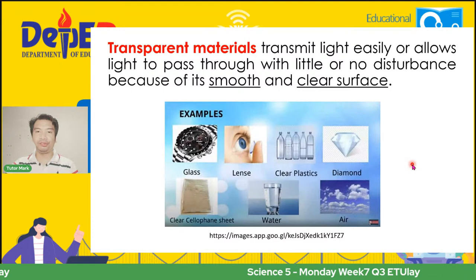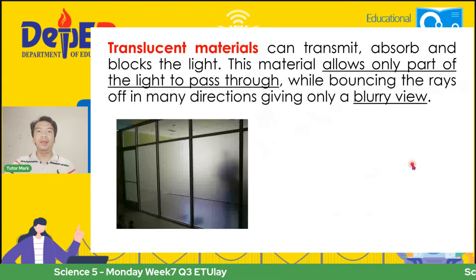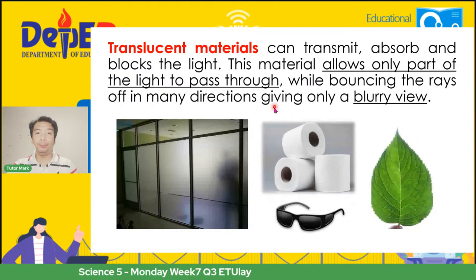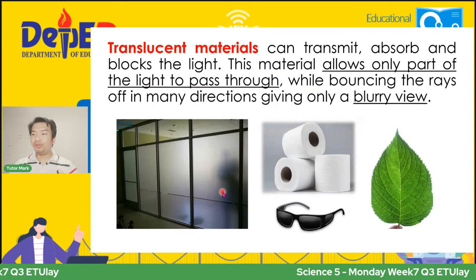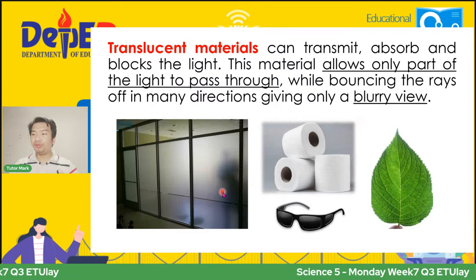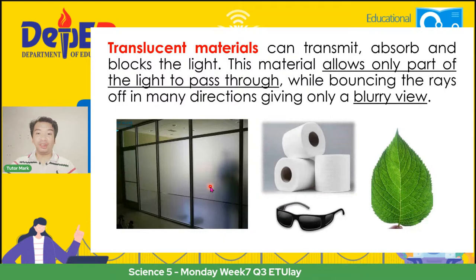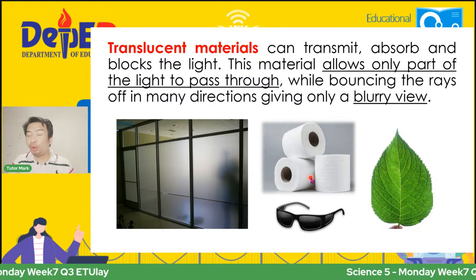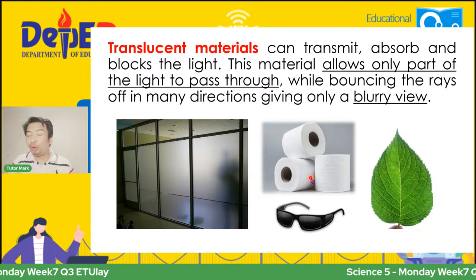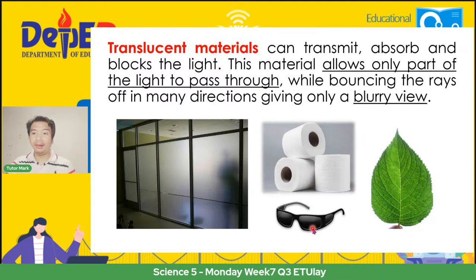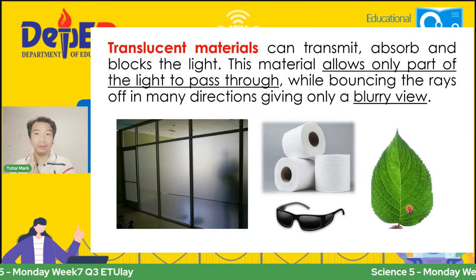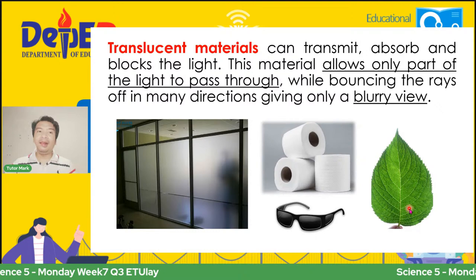On the other side, we have the so-called translucent materials. It can transmit, absorb, and block the light. These materials allow only part of the light to pass through while bouncing the rays off in many directions, giving only a blurry view. Halimbawa, ang frosted glass ay nagpapakita ng kaunting anino, kaunting reflection, pero hindi direct ang pumapasok ang liwanag — translucent ang tawag natin dito. If you have a tissue paper or piece of paper, kapag nadaanan ng liwanag, hindi direct ang tumatagos. Same thing with shades at maging ang dahon — nabablock ang ilan sa light, may ilan na inaabsorb depende sa kulay nito, at nagpapakita ng blurry view. Yan ang katangian ng translucent materials.